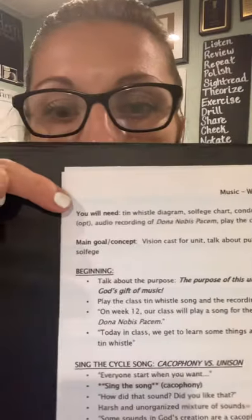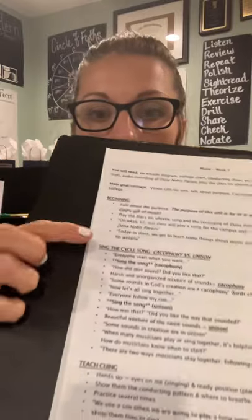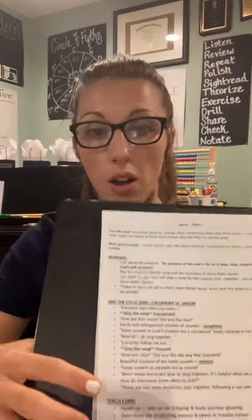At the top every week you'll see a 'you will need' section — a supply list — and then it has the main concept and the goal for the week, so you can see at a glance what you're doing. Then we have headings for the major sections of class: the beginning, the new teaching time, the big concepts. The bullets under those are questions or action items that you'll actually do.